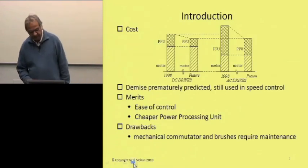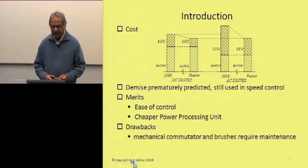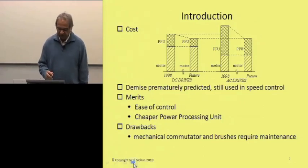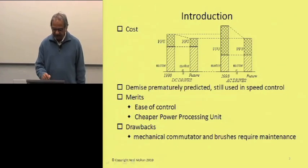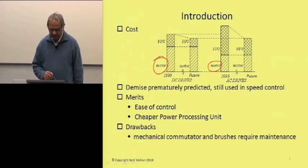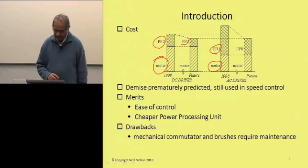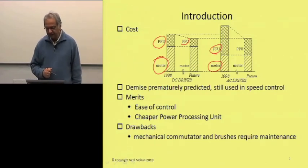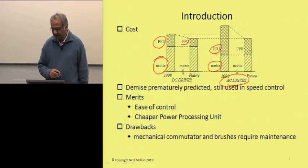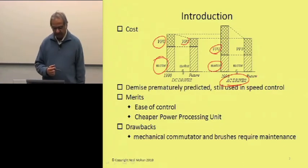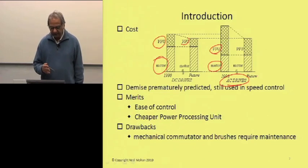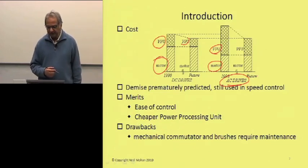Just a little bit of introduction: in DC drives, the cost of the motor itself is higher as compared to AC drives. The motor cost is higher here, whereas in AC drives the motor cost is lower, but the power processing cost is lower in DC drives. You can see that this power processing cost is going down, and therefore AC machines are becoming more competitive, but the demise of DC machines and drives has been prematurely predicted.